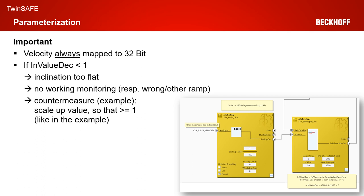That was the quick realization of an SS1 functionality with envelope monitoring. For the parameterization, a short summary: the velocity is always mapped to 32 bits, so even if the encoder only gives 24 bits for example, the value is shifted left so the lesser bits are zero and the upper bits always match the information — in our case a 32-bit integer value. When you calculate the scaling factors, for the envelope function block you always have to check the decrement for the input value. If that decrement is less than one, the inclination is too flat and you have no working monitoring for your application.